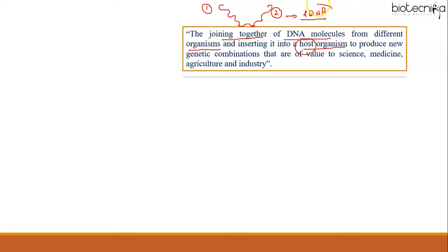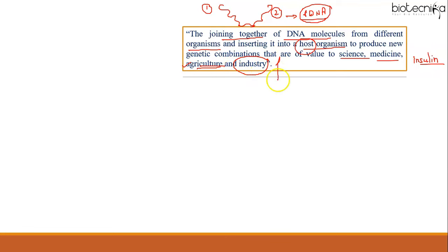The reason we construct recombinant DNA molecules is that the new genetic combinations produced are of value to science, medicine, agriculture, and industry. We can produce recombinant vaccines, recombinant insulin, and recombinant growth hormones valuable to medicine. We can produce genetically modified crops, pesticide-resistant crops, and herbicide-resistant crops valuable to agriculture, as well as products valuable to the food, biotech, and pharma industries.